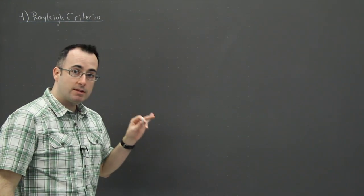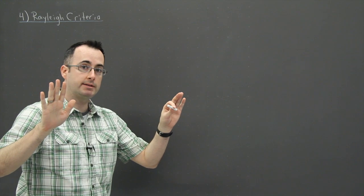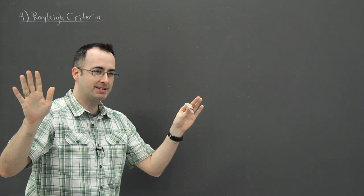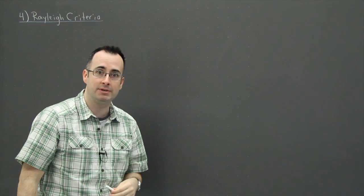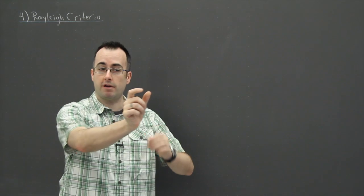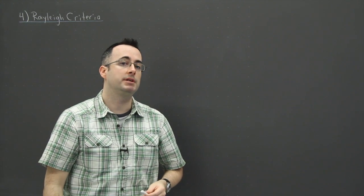What this criteria is, is a way to tell if two objects are actually two objects. So this might seem really silly, like of course I can tell two objects apart. Not really. If these two objects are far enough apart, you won't be able to tell them apart.